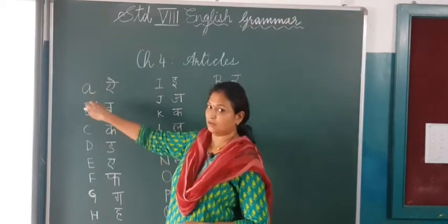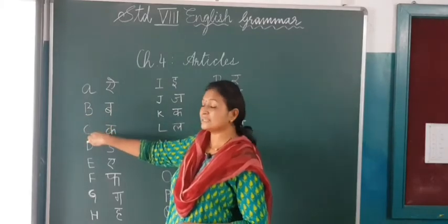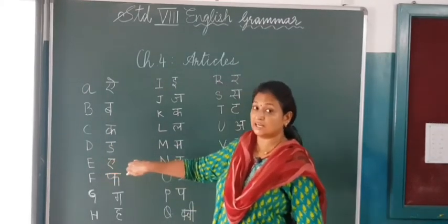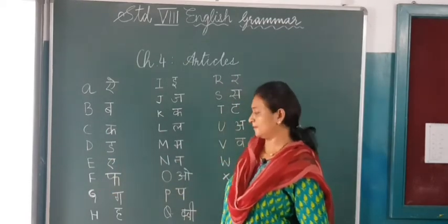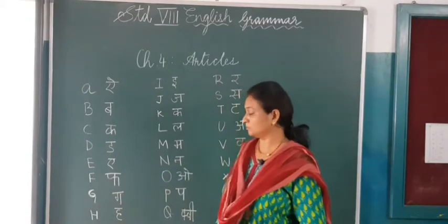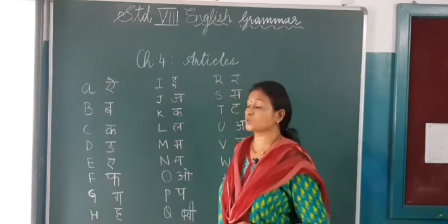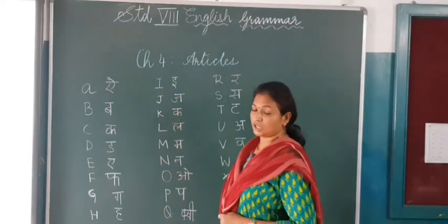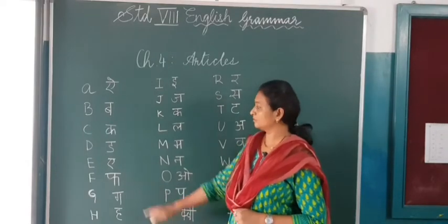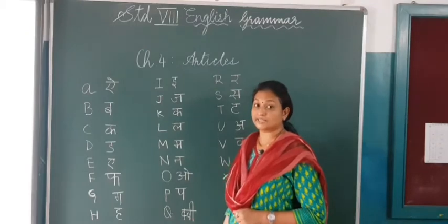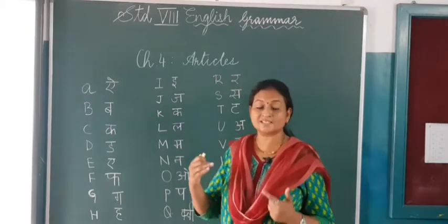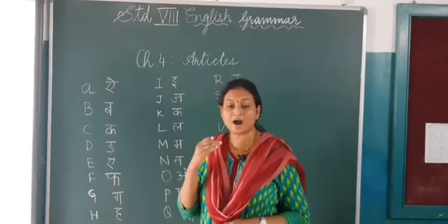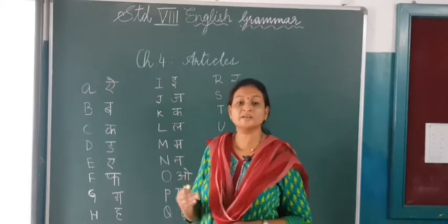A — apple. B — boat. C gives the sound — cat. D gives the sound — dog. E — egg. F — fan. G gives the sound — goat. H gives the sound — house. I — ink pot. J gives the sound — jug. K gives the sound — kite. Once you are familiar with those sounds, learning and writing of spellings becomes very easy. So try to understand the sound of these alphabets — it will help your writing skills also.